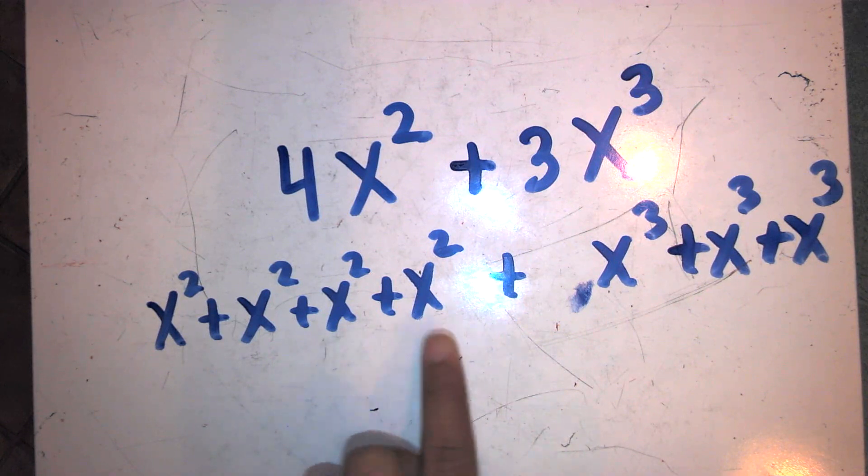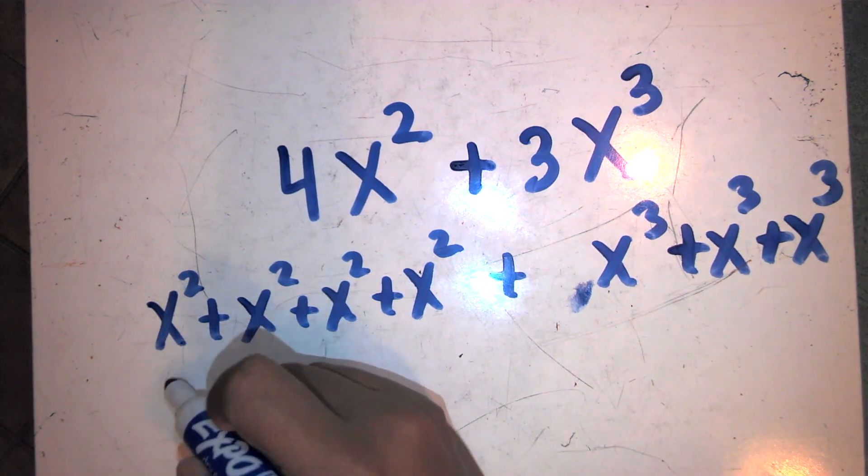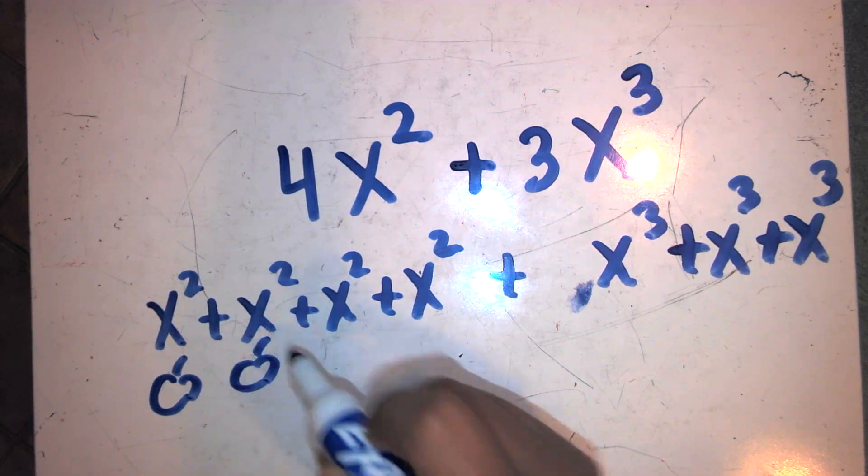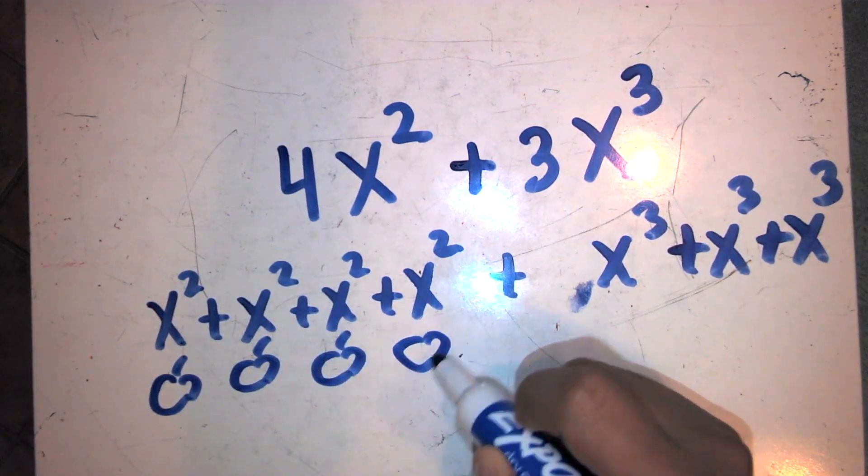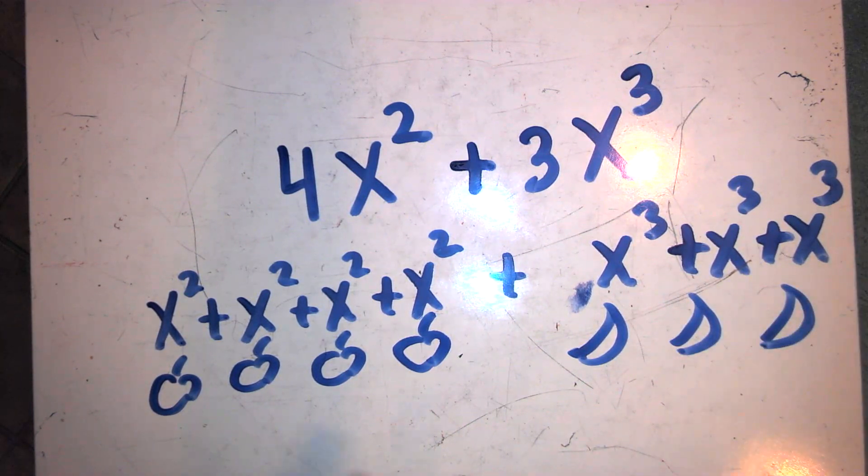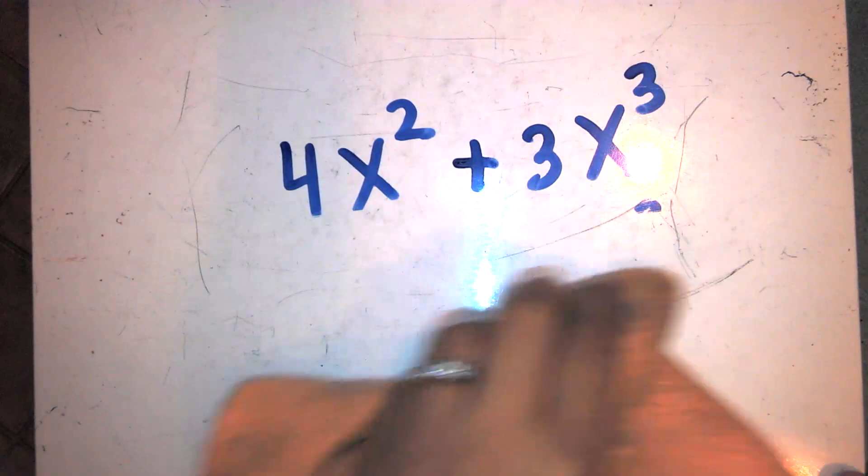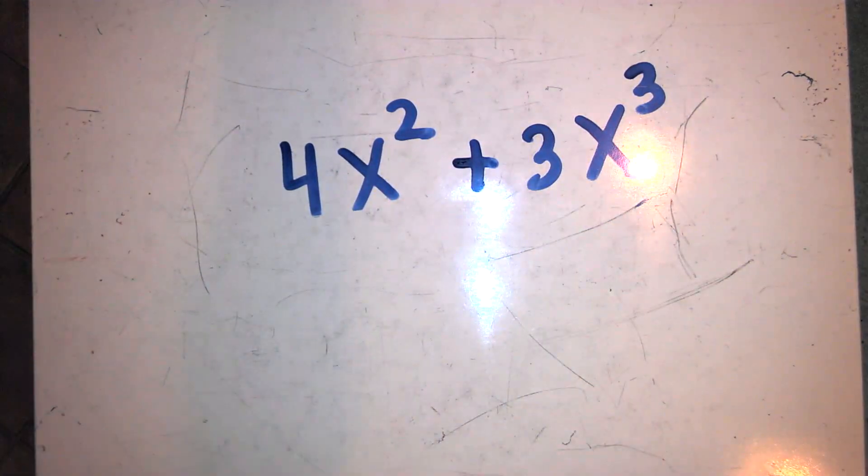It's like saying I have four apples plus three bananas. How many apples do I have in total? It doesn't change the fact that I added three bananas. It doesn't change the number of apples that I have. So I can't combine them. Thank you.